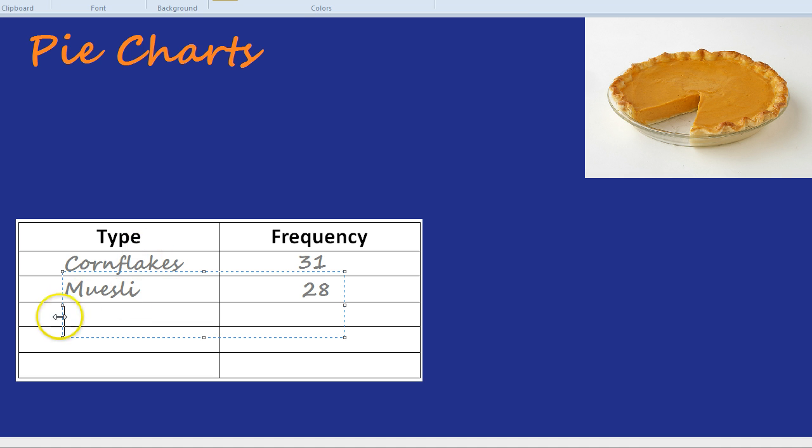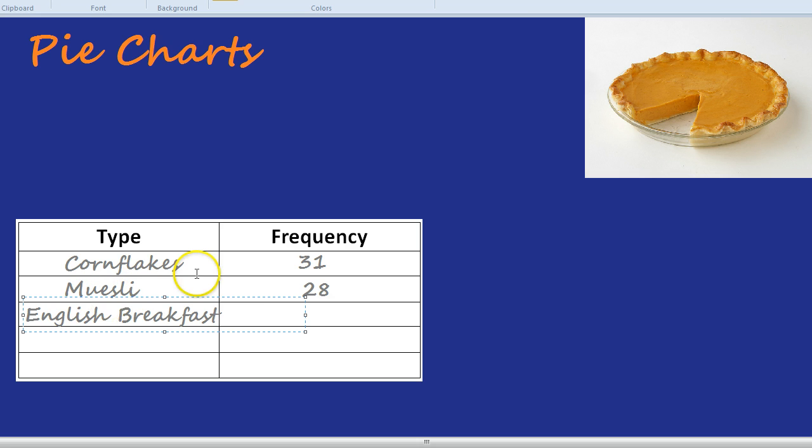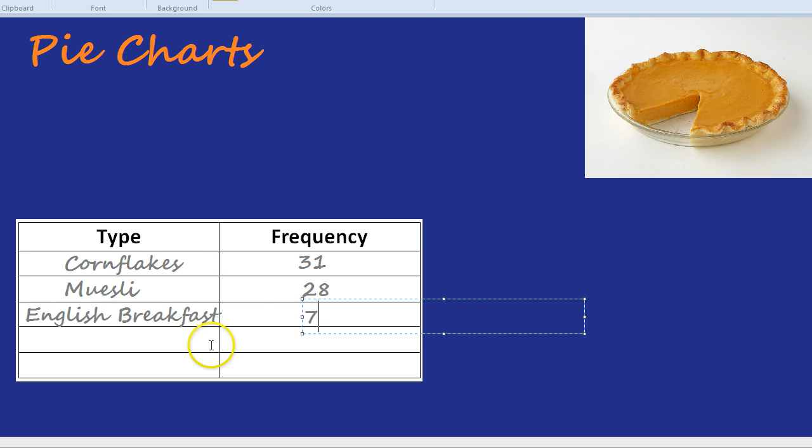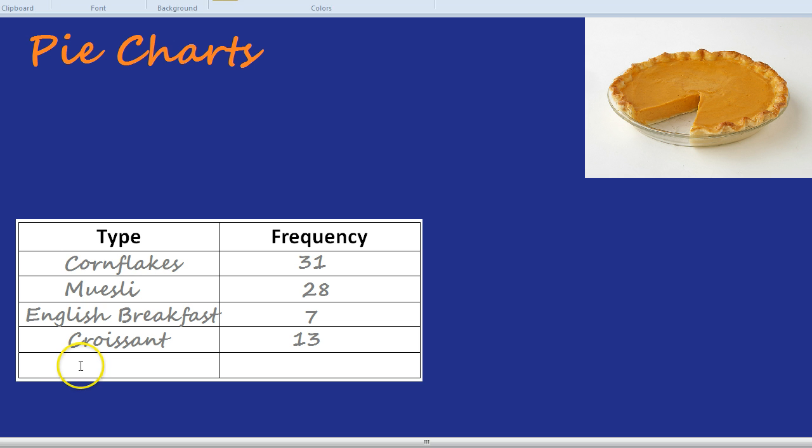Next, there's the English breakfast. Can't resist the English breakfast. And let's say surprisingly in England, there was only 7 people. And croissant, and that was my attempt at pronunciation, and there were 13 people who had croissant in this survey.